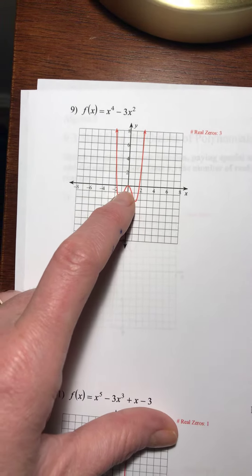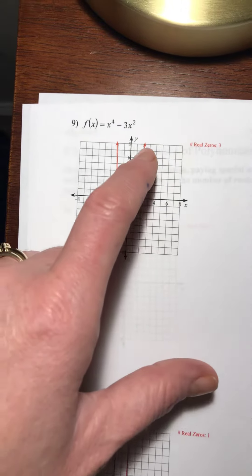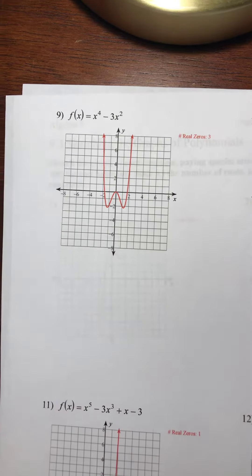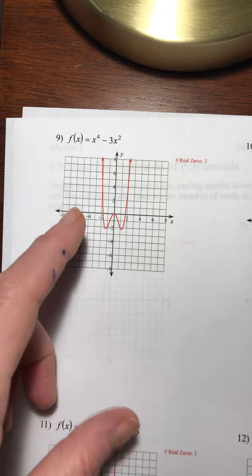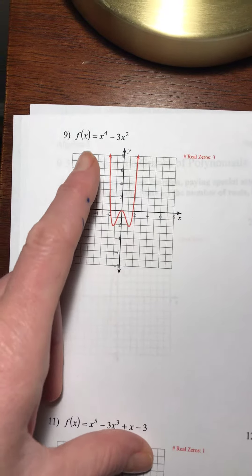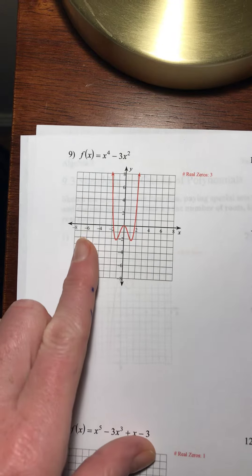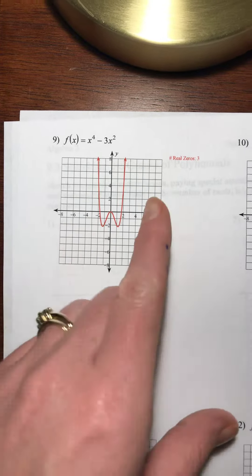that is the result of if we were to factor this out, which we'll see more in our next lesson, we will have some of our zeros with multiplicity of two.